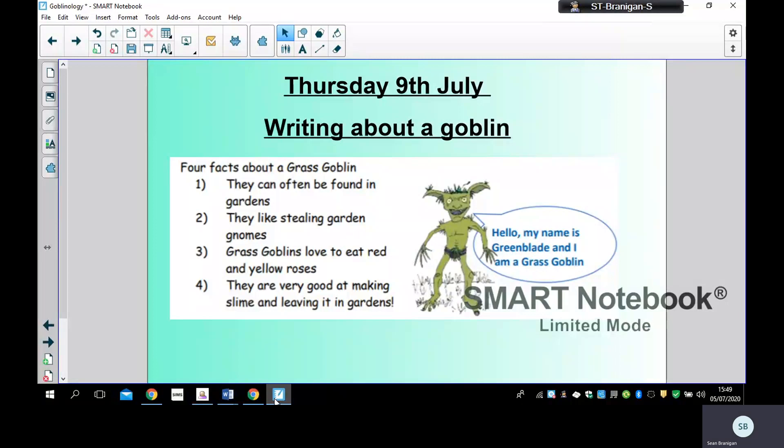So these were the facts. They can often be found in gardens. They like stealing garden gnomes. Grass goblins love to eat red and yellow roses and they're very good at making slime and leaving it in gardens.